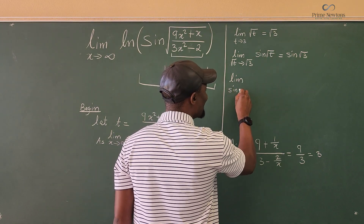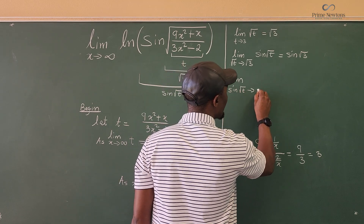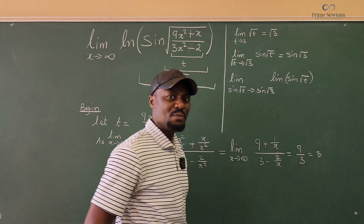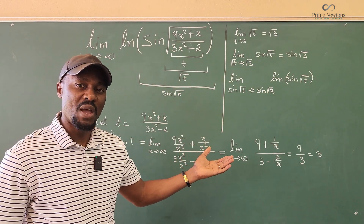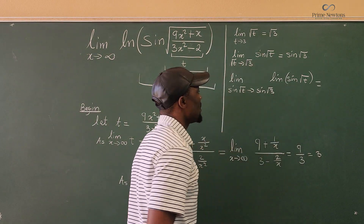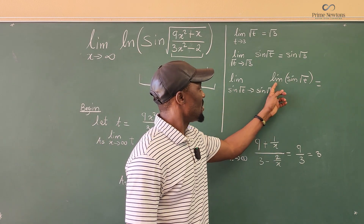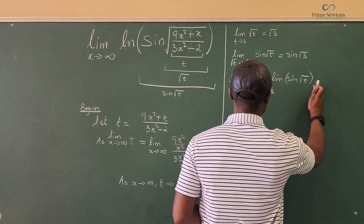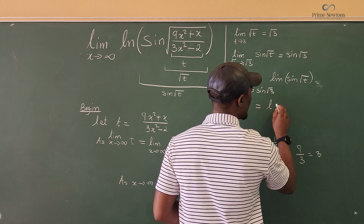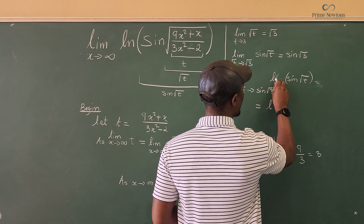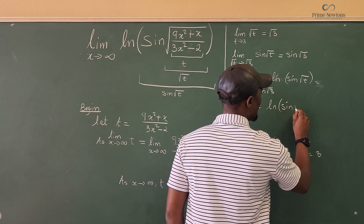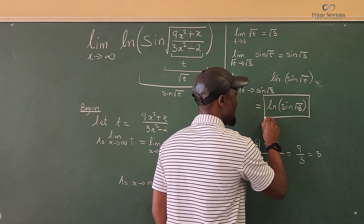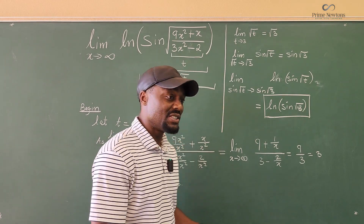Finally, take the outermost layer: the limit as sine(√t) approaches sine(√3) of the natural log of sine(√t). Since sine(√3) is a constant, plug it in and you get the natural log of sine(√3). My quick method gave the same answer because every intermediate step here exists — sine of √3 exists.